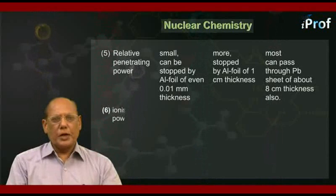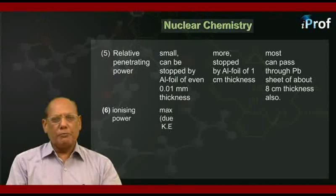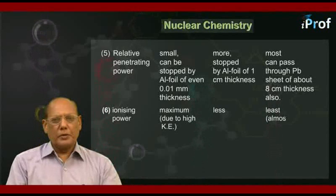Number six, ionizing power. It is maximum for alpha particles due to their high kinetic energy, less for beta, and least or almost nil for gamma.